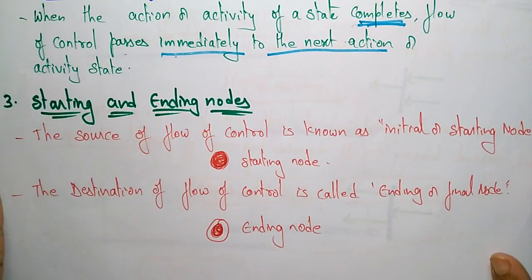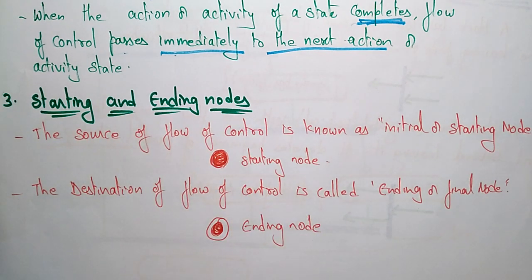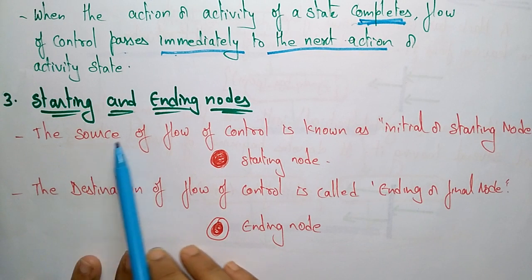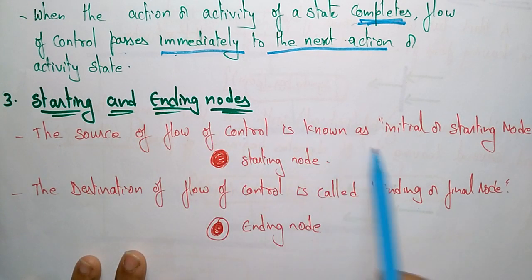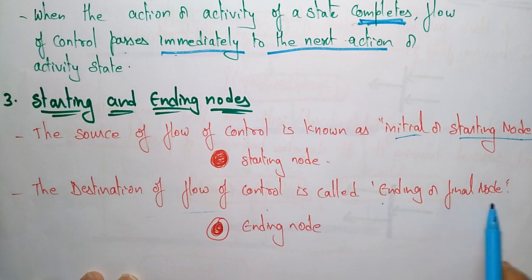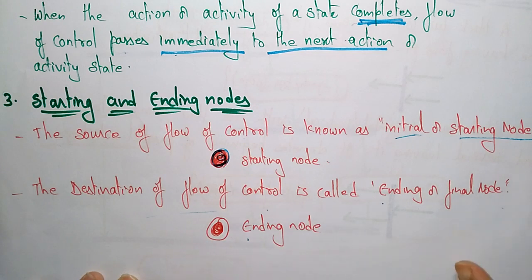The next notation in the activity diagram is starting and ending nodes. An activity diagram starts with a starting node and ends with an ending node. The source of the flow of control is known as the initial or starting node, and the destination of the flow of control is called the ending or final node. The starting node and ending node are each represented by specific symbols.